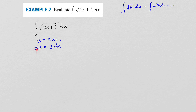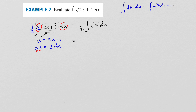For this to work, you need du in the integral. du is 2 times dx, and I don't have the 2 in the integral, so I'll multiply inside by 2 and put one-half on the outside to compensate. The square root of 2x plus one is the square root of u, and 2 times dx is du. So this becomes one-half integral of square root of u du.